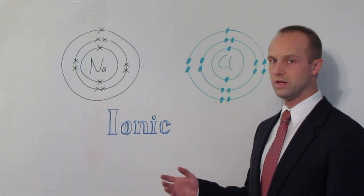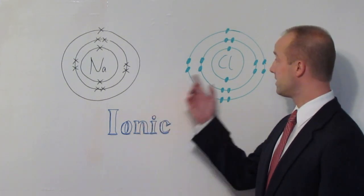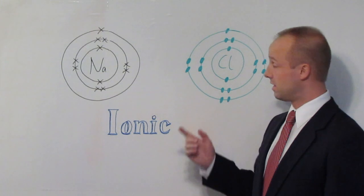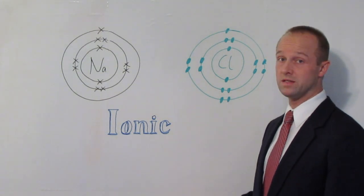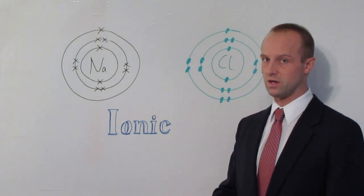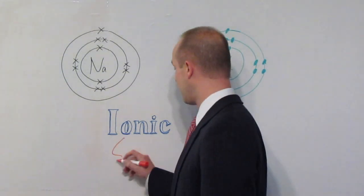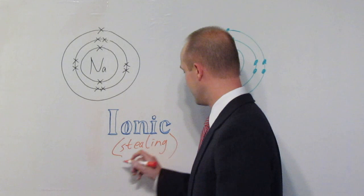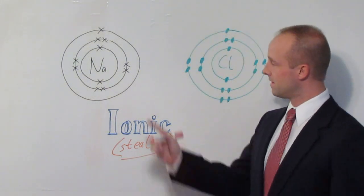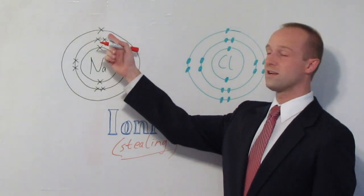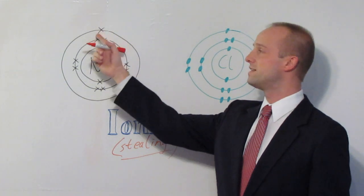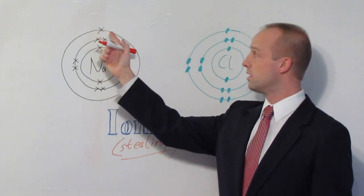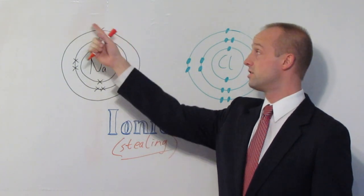Now remember, when atoms bond to each other they do so to try and complete their outer shell of electrons. In ionic bonding, the way they do this is one atom will steal electrons off the other. So try and remember that ionic bonding is stealing. The sodium over here has just got one electron in its outer shell, so it only needs to get rid of one. The easiest way to complete its outer shell is to just ditch that one.